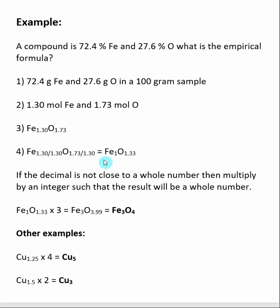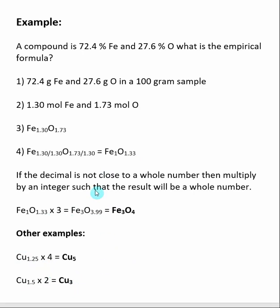Remember: when dividing gives a number too far from a whole number to round, multiply by an integer to get close enough. If you have 0.33, multiply by 3. If you have 0.25, multiply by 4. If you have 0.5, multiply by 2. For example, a subscript of 1.25 multiplied by 4 gives 5; a subscript of 1.5 multiplied by 2 gives 3. These are the three major cases — 0.33, 0.25, and 0.5 — after which you continue with the rest of the question.